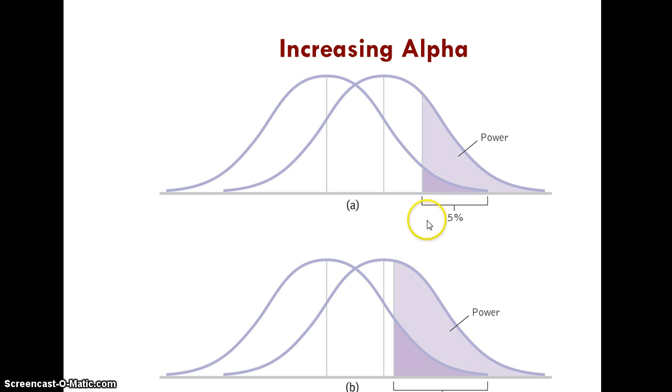I'll come back over here. And so here's just what I was talking about. If you increase alpha, you notice that these are overlapped the same amount. Here's our statistical power. And if you make that into 10% instead of 5, you've just increased your power. There's more area under this curve.